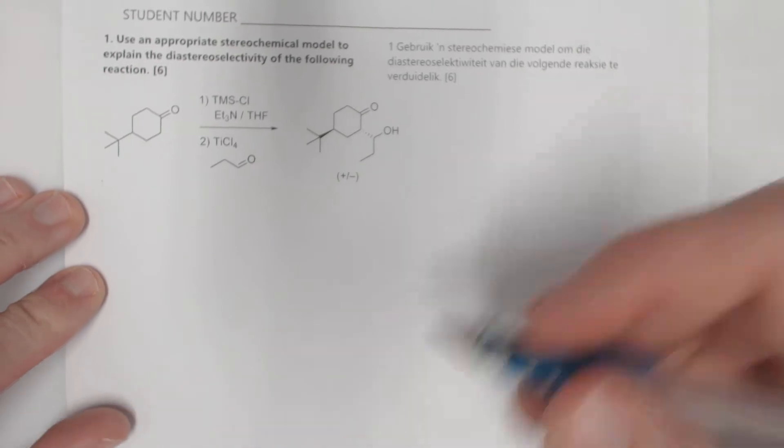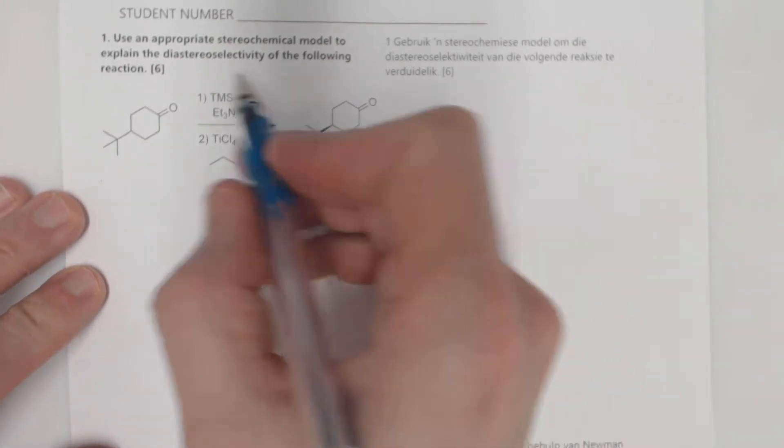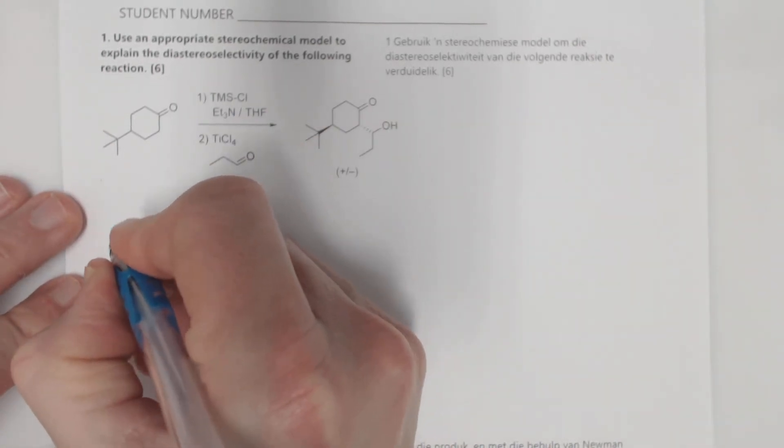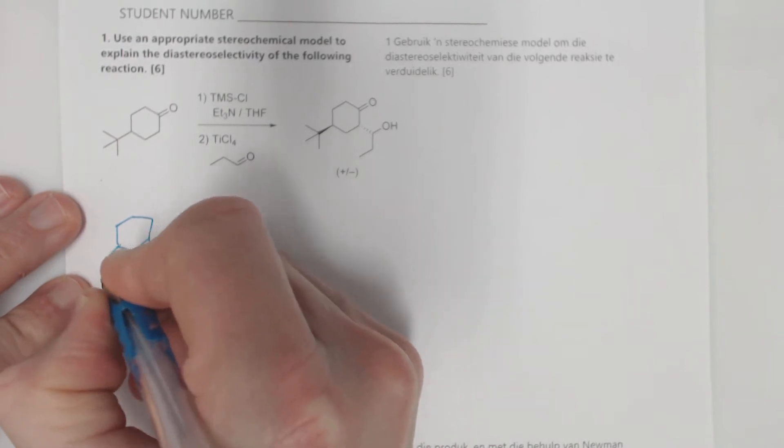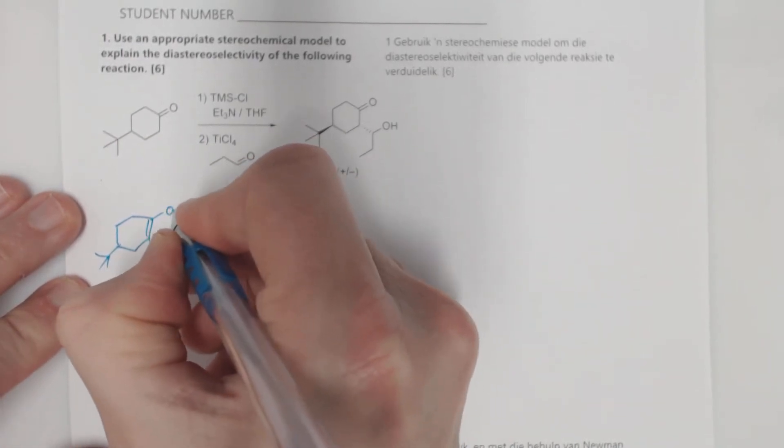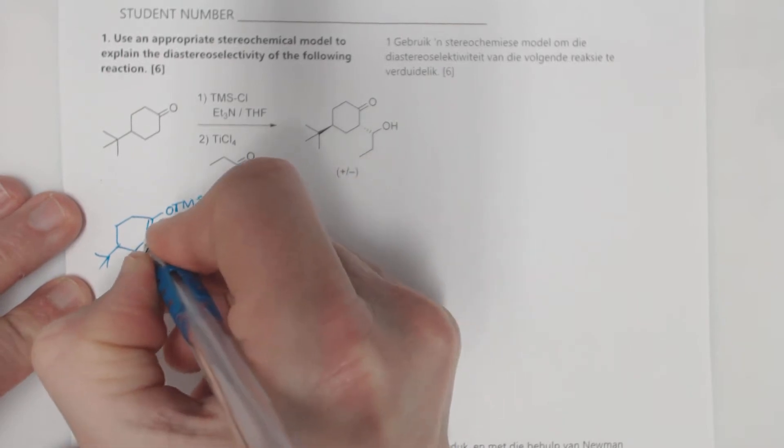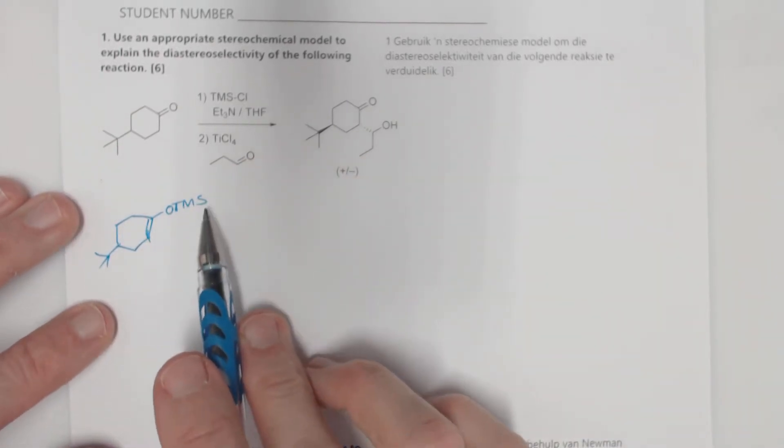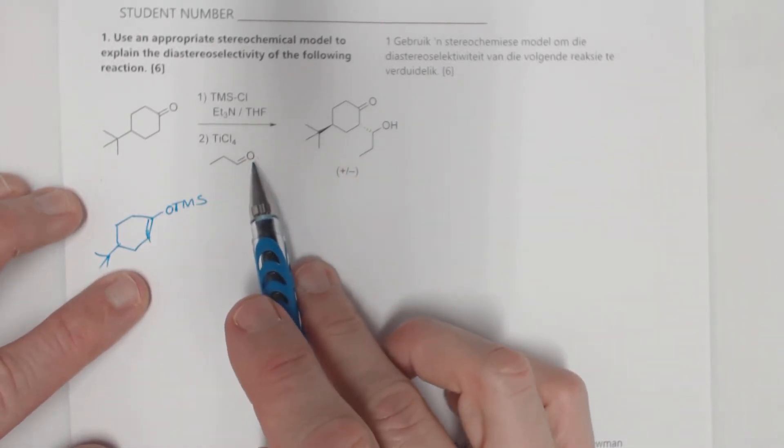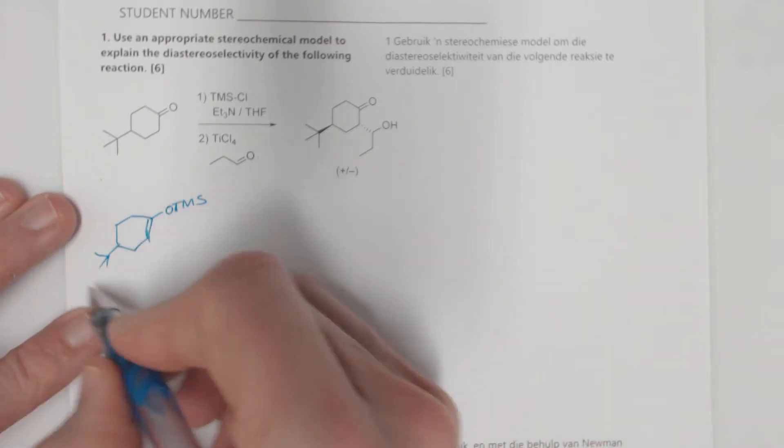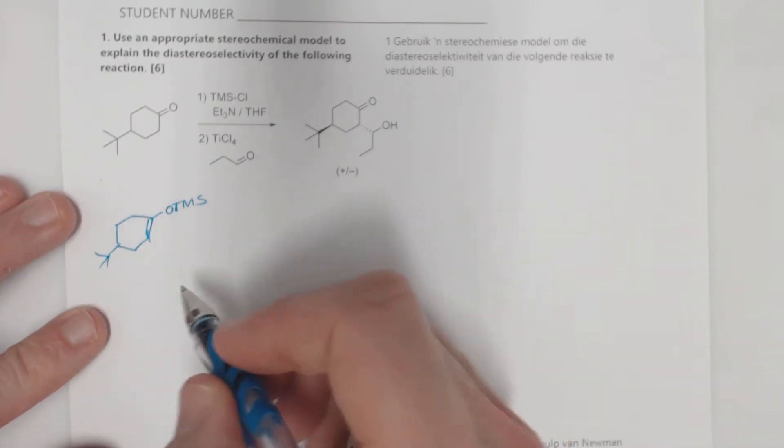This is really one of those things that's just going through the motions. The key thing here is to recognize that you're actually forming the silyl enol ether, so OTMS is what you're looking at, and that this is going to then react with the aldehyde. This over here is what we need to look at in terms of the half-chair.